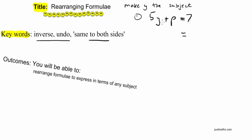For example, if I subtract one from this side, I've also got to subtract one from that side. Otherwise the equal sign will no longer be true. Now I want to make y the subject. It's 5y, which is 5 times y, plus p. So the y is being multiplied by 5 and then p is being added to it. I've got to undo all of those things, doing the same to both sides. It's always a good idea to undo the thing that's being added or subtracted first, then deal with the multiplier.